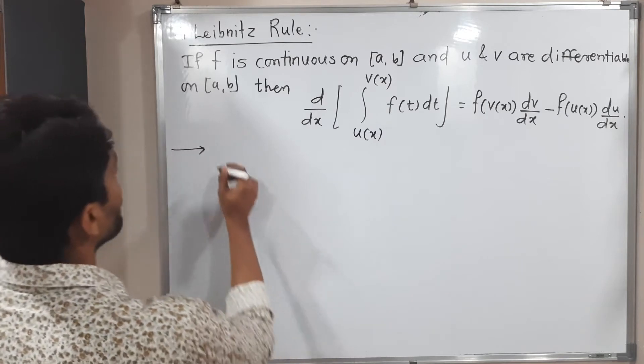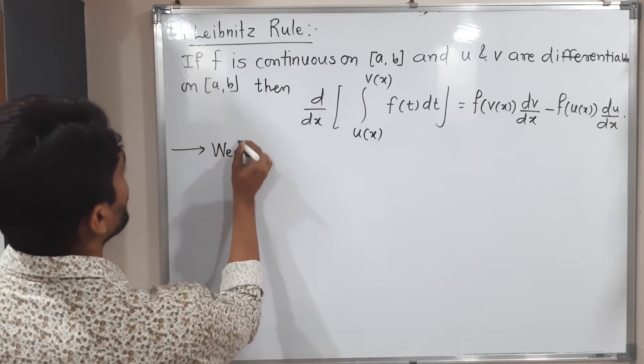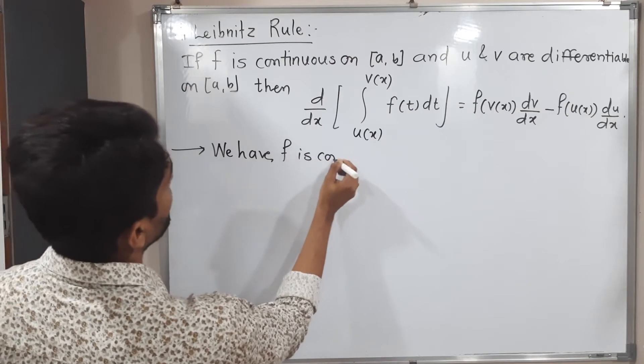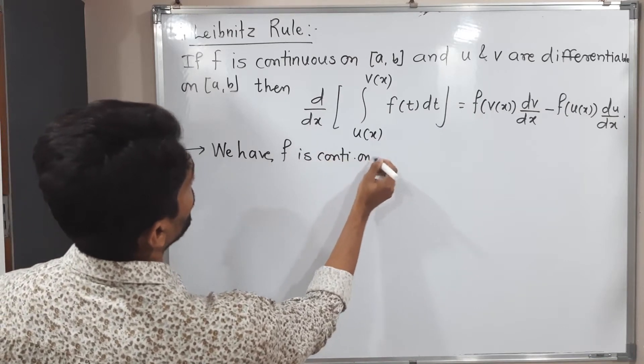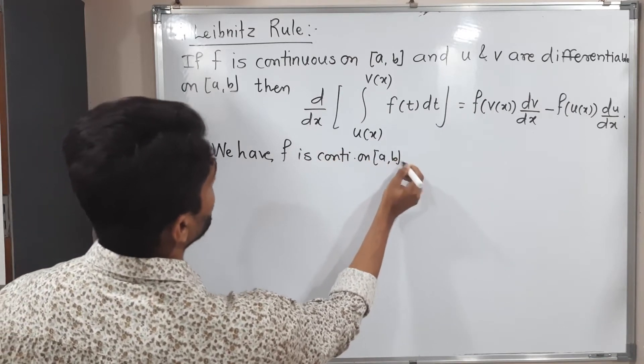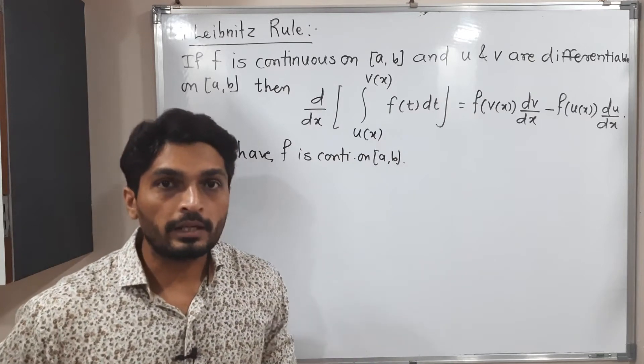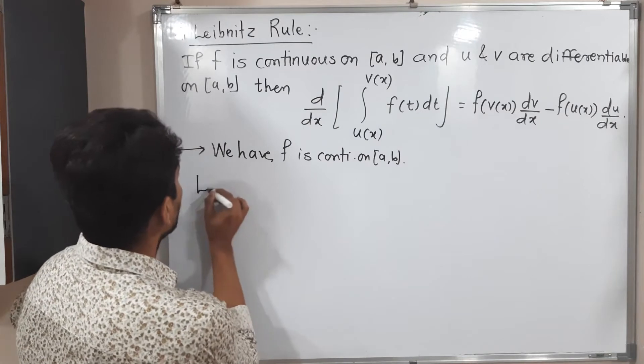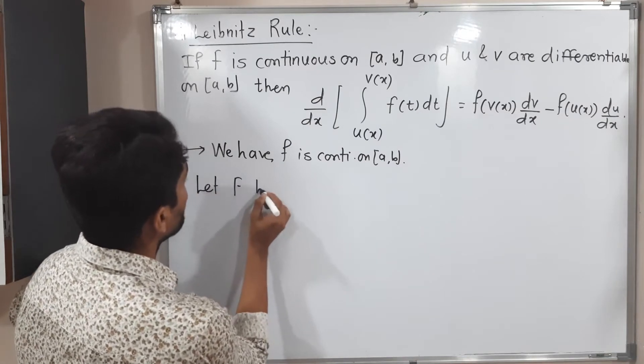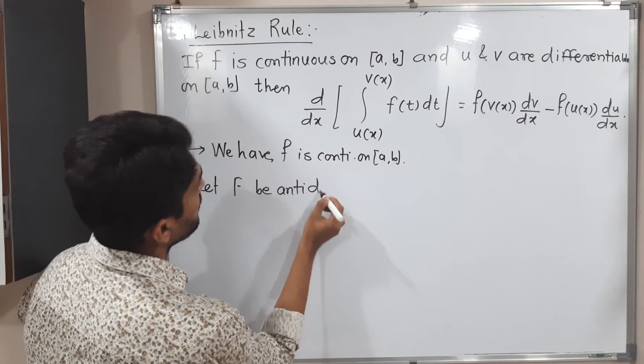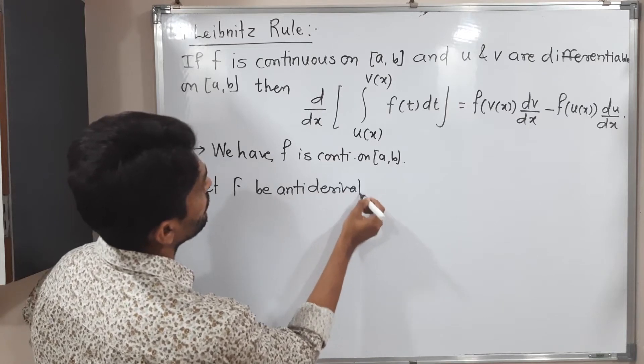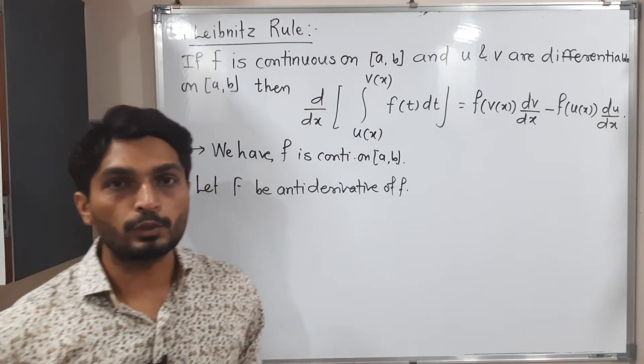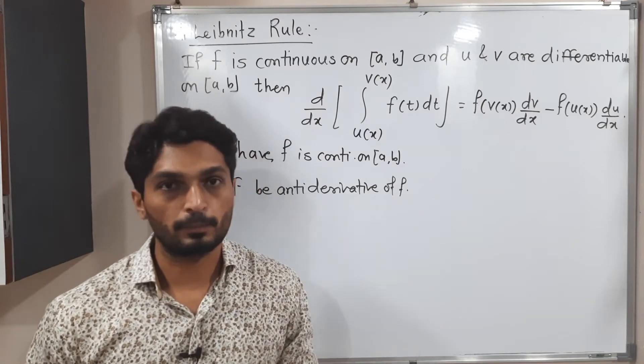So let us start with the given information. What we have? We have f is continuous on closed interval [a,b]. We are going to take anti-derivative of f, small f. Let capital F be anti-derivative of small f. Anti-derivative means exactly opposite to the derivative or you can say the integration.